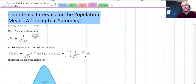Okay, we are looking at a conceptual summary of confidence intervals for the population mean. This is pretty much putting together a whole lot of stuff we've been doing questions on and thinking about, and so it all comes from